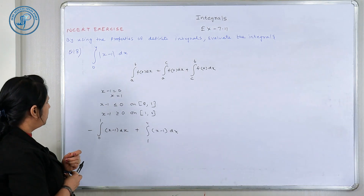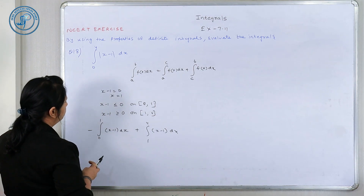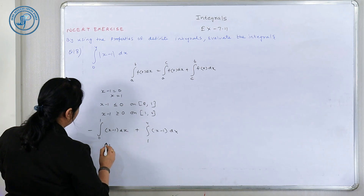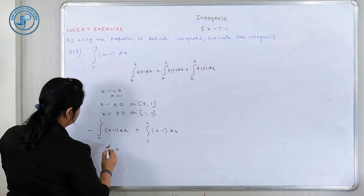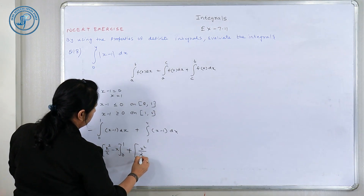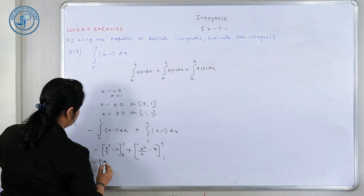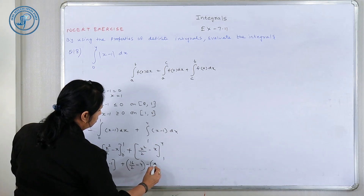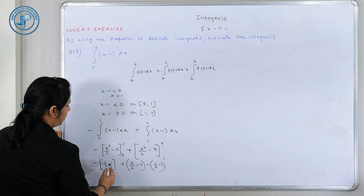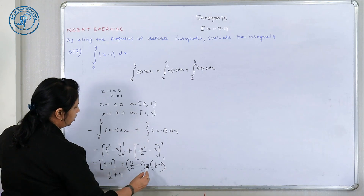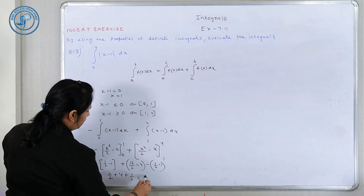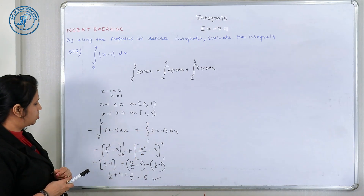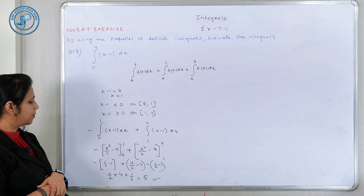0 to 1 के बीच में: integrate करने पर X²/2 minus X, 0 to 1. यहाँ पर X²/2 minus X, 1 to 4। Upper limit minus lower limit करेंगे: यहाँ यह 0 है। 16/2 minus 4 (upper limit) minus 1/2 minus 1 (lower limit) = minus 1/2 मेरा 1/2 हो जाएगा। यह 8 minus 4 = 4 हो गया। तो 1/2 + 4 = 5। 0 to 1 में negative function था, 1 to 4 में positive, upper-lower limit solve किया। Answer is 5.